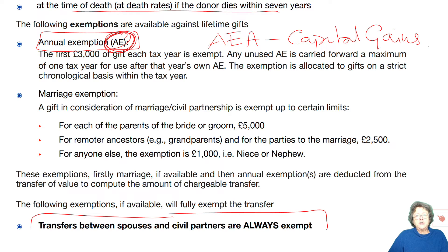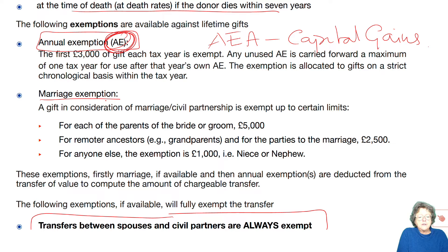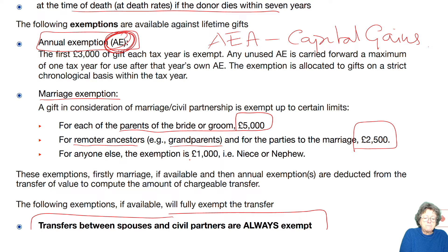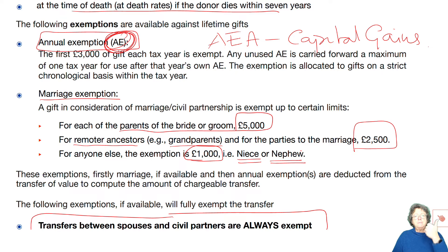There is a marriage exemption. If you give a gift in consideration of a marriage, there are certain limits: parents of the bride or the groom can give £5,000; the bride and the groom get the same; remoter ancestors — basically a grandparent — get £2,500; and anyone else gets £1,000. Some students get mixed up with what is a remoter ancestor — so basically: parents £5,000, grandparents £2,500, anybody else you come across who's giving the gift is £1,000.